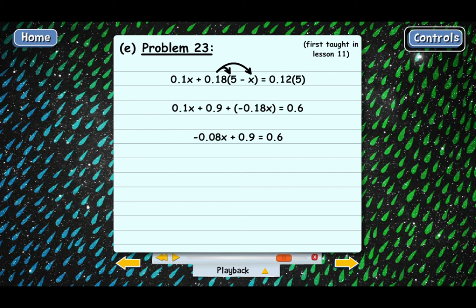And now we just undo in reverse order. We need to subtract 0.9 from both sides. And that gives us just negative 0.08X on the left. And then 0.6 minus 0.9 is negative 0.3 on the right.